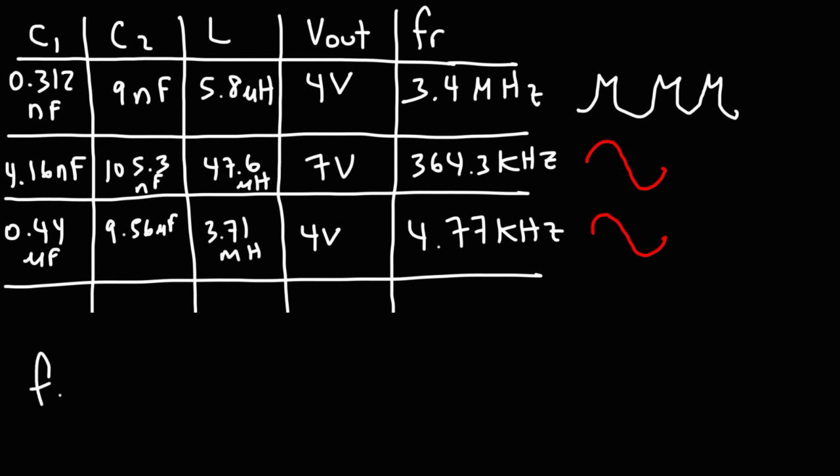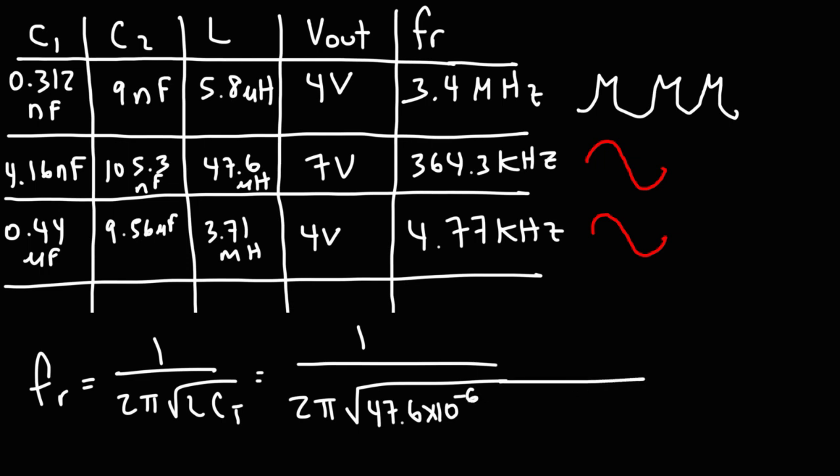Now that we have CT, we can calculate the resonant frequency using this formula. L, for the second trial, is 47.6 microhenries. So micro is 10 to the minus 6. And then CT, we said it was 4 nanofarads. Nano is 10 to the minus 9. If you plug this in the way you see it, you should get a theoretical frequency of 367.1 kilohertz. Which is very, very close to the actual frequency of this experiment.